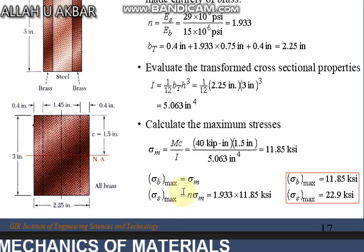For brass and for steel we will multiply by n into σ_max which we obtained from brass. So maximum stress we obtained for brass is 11.85 ksi and for steel it is 22.9 ksi.